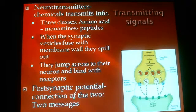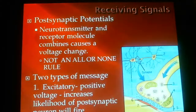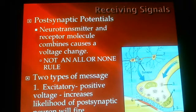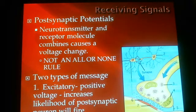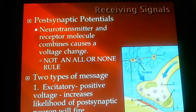The postsynaptic potential is the connection of the two messages — the neurotransmitters and the receptor molecule combine, causing a voltage change. When the neurotransmitter is sent across the synaptic cleft and connects with the receptor site of the other neuron, this is called a voltage change of connection and the message is sent. But this is not an all-or-none rule — just because the neurotransmitter gets sent does not mean the message will get through. There are things that could cause it to be blocked, or the key may not fit the lock.